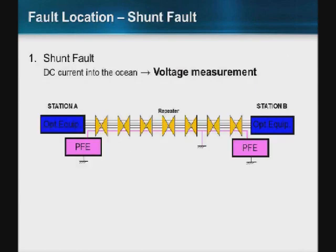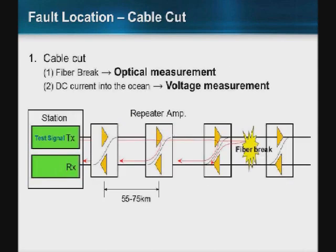In a shunt fault scenario, to isolate and localize a repair and get a ship out to the site, you typically take a voltage measurement. At each end of the cable station, a voltage measurement from the PFE can determine roughly where the shunt fault occurred. In the case of a full fiber cut, you can perform an additional optical OTDR measurement, which detects the backscatter of light at the actual fiber break. That test signal is sent back to the test kit — very sensitive equipment — and can determine within approximately 30 meters where that fiber fault occurred, even over spans of several thousands of kilometers.